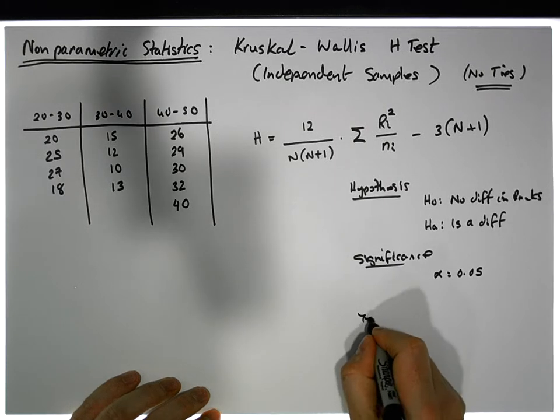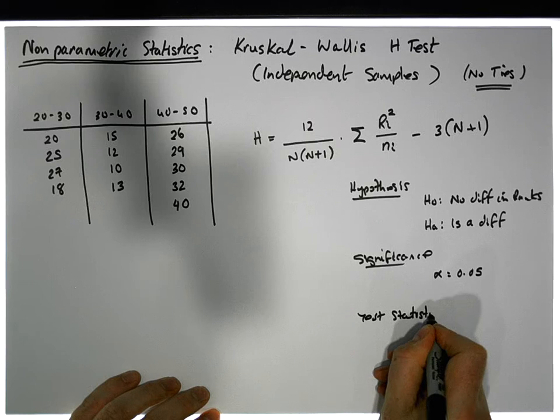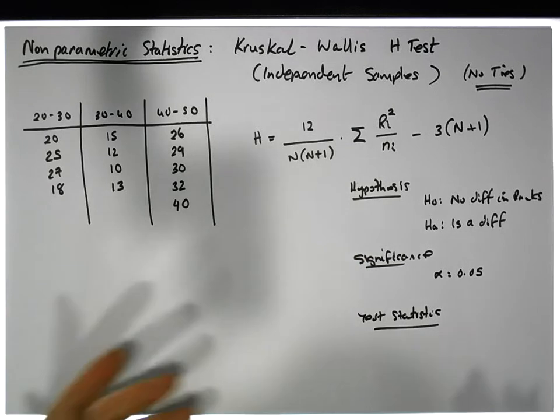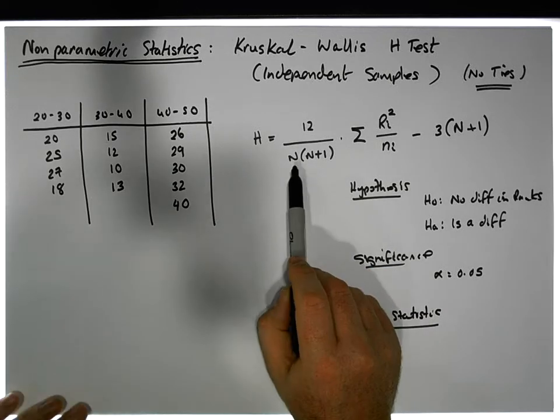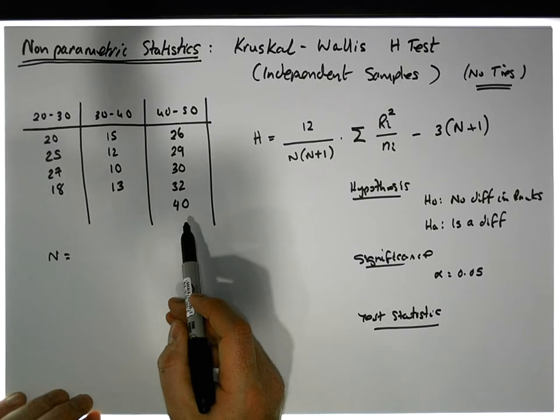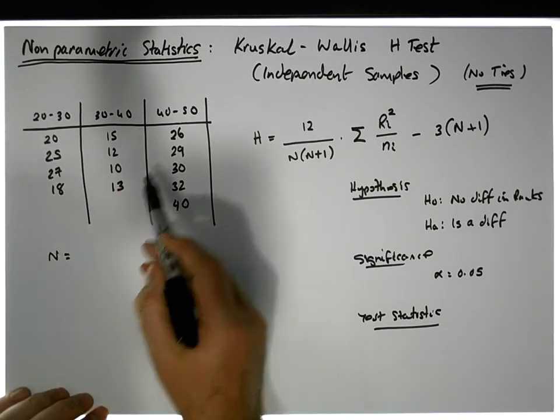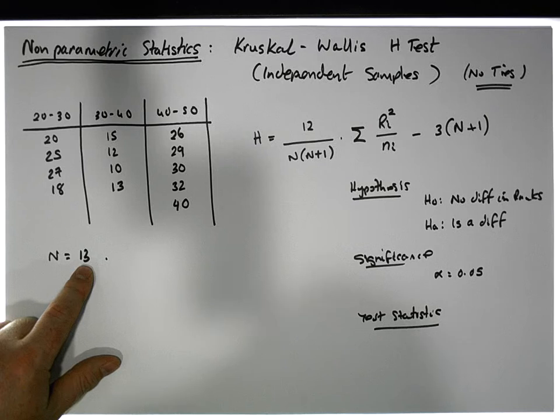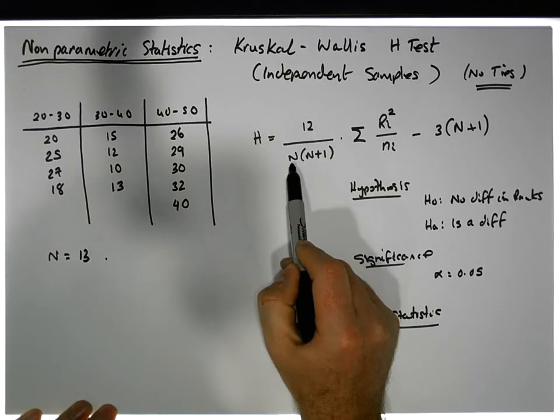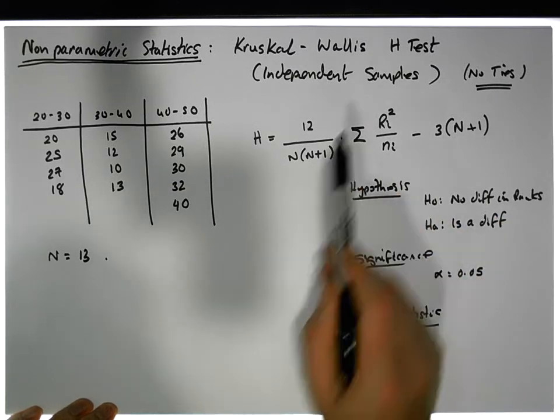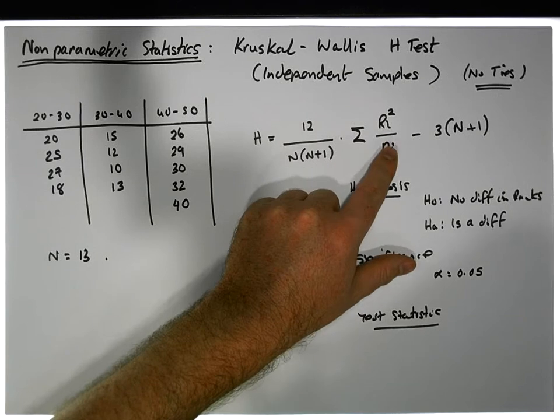And then we have to calculate our test statistic, which we're going to do now in a moment. Then we have to calculate the critical values. And then we need to make our decision by comparing our test statistics to our critical values. So this is the five-step process in relation to a hypothesis test. So what we need to do is figure out what n is. n is the total number of observations. So we have four here, four here, and five here, which gives us a total of 13 observations. So now we have H is 12 divided by 13 times 13 plus 1 minus 3 times 13 plus 1. And then we have to take into consideration this factor here. So we have to figure out the ranks and the individual sample sizes.